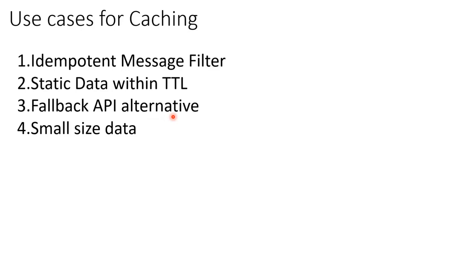Fourth is small data size. If we have a small data size that we can cache, it makes sense. But if the data size is huge, caching is not a good idea and we should consider other alternatives.